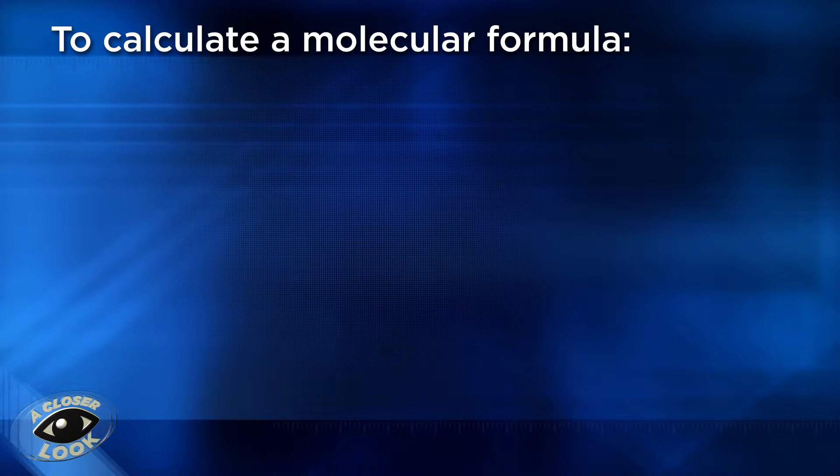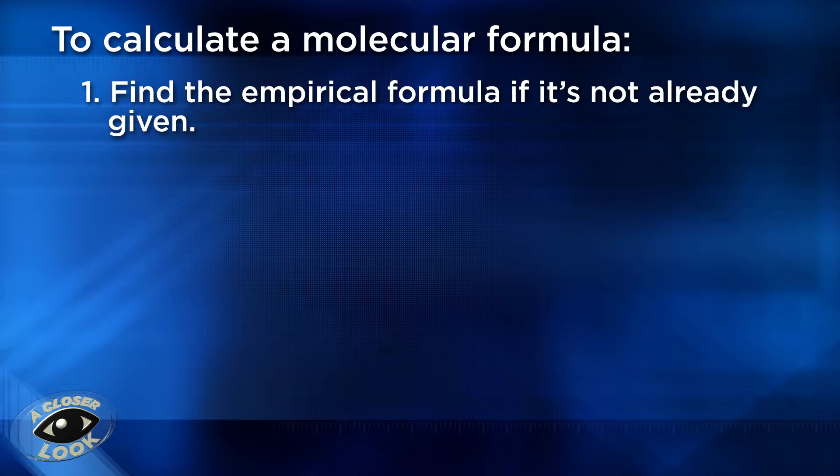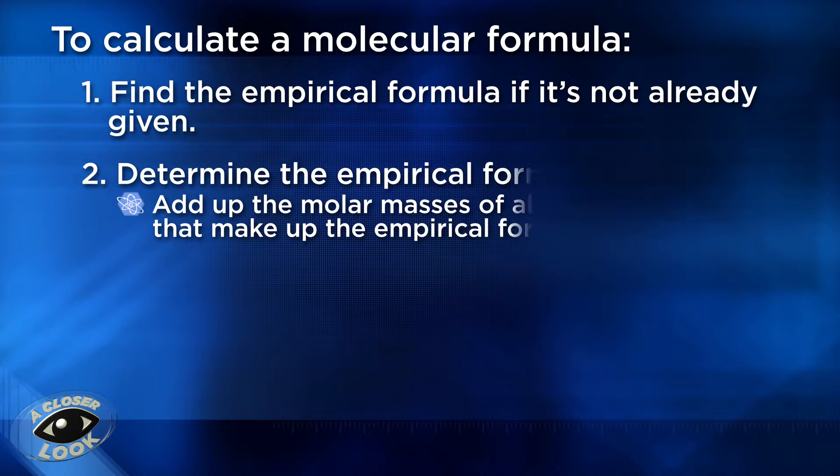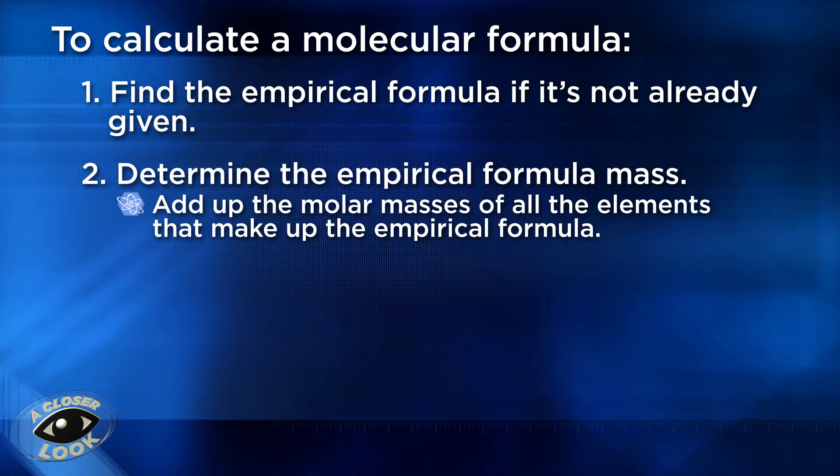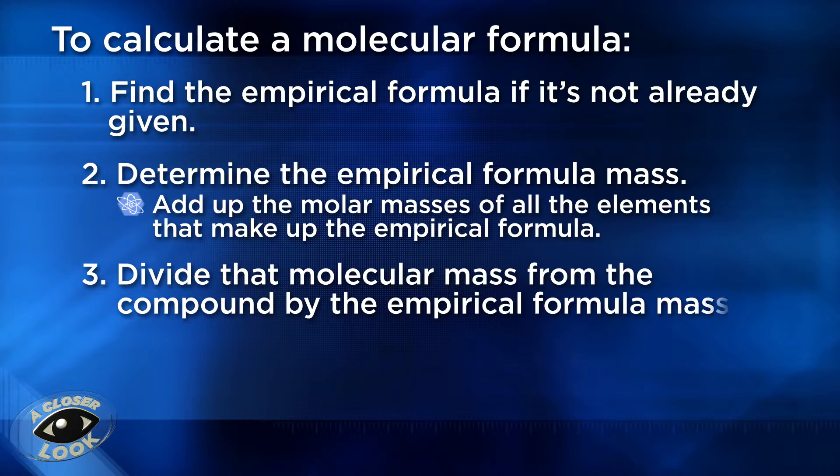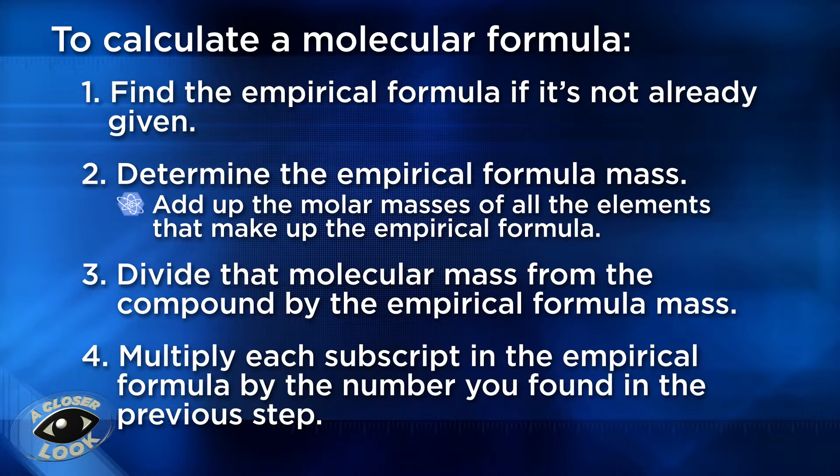To calculate a molecular formula, first find the empirical formula if it's not already given. Then determine the empirical formula mass. You find this the same way that you calculate the molar mass for any other compound. Just add up the molar masses of all the elements that make up the empirical formula. The next step is to divide that molecular mass from the compound by the empirical formula mass. Then multiply each subscript in the empirical formula by the number you found in the previous step, when you divided the molecular mass by the empirical formula mass.